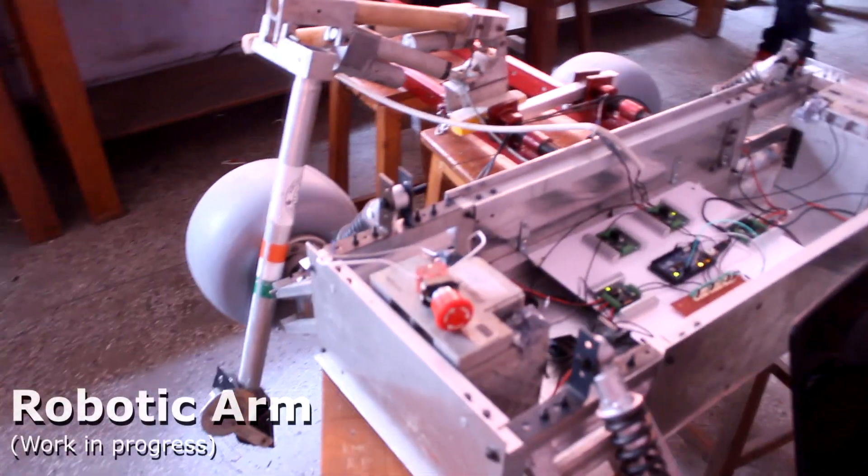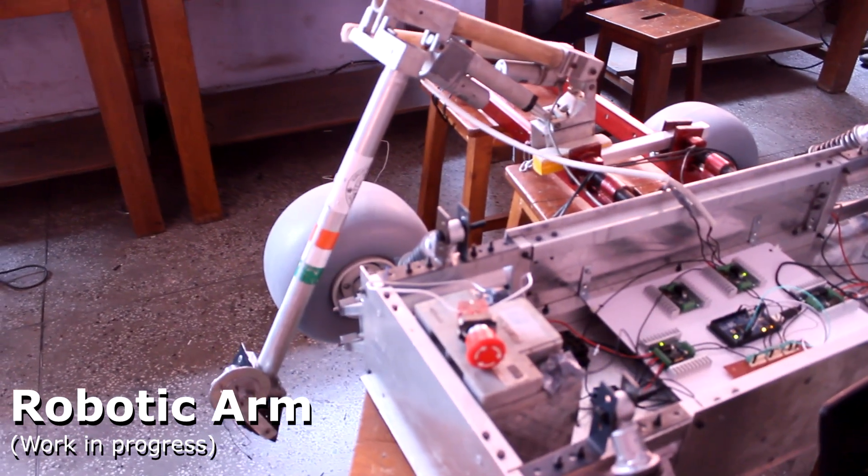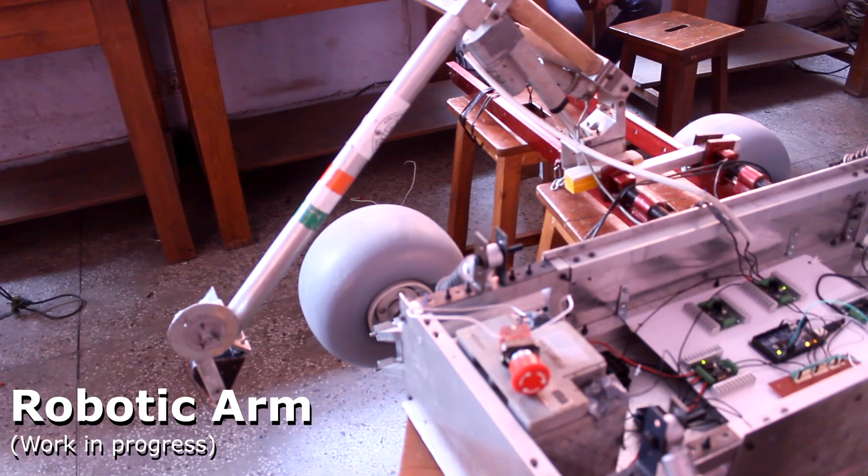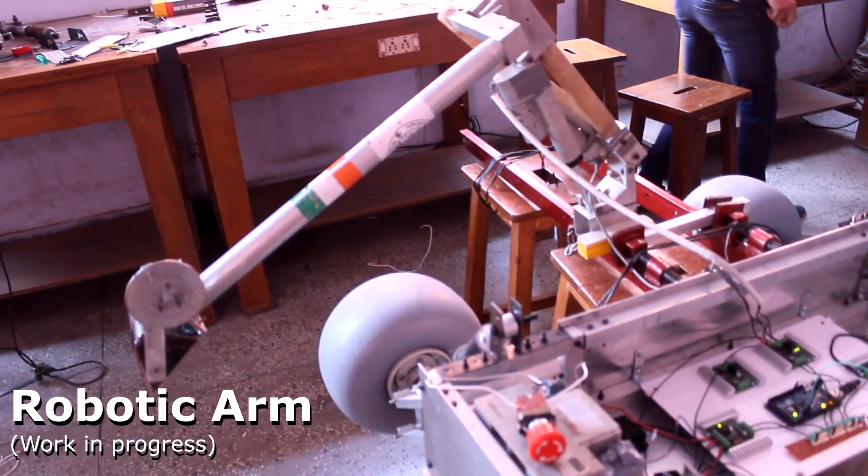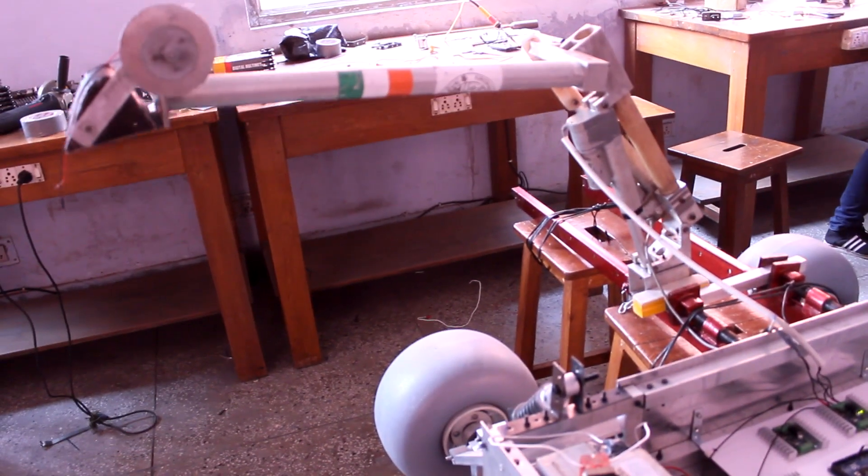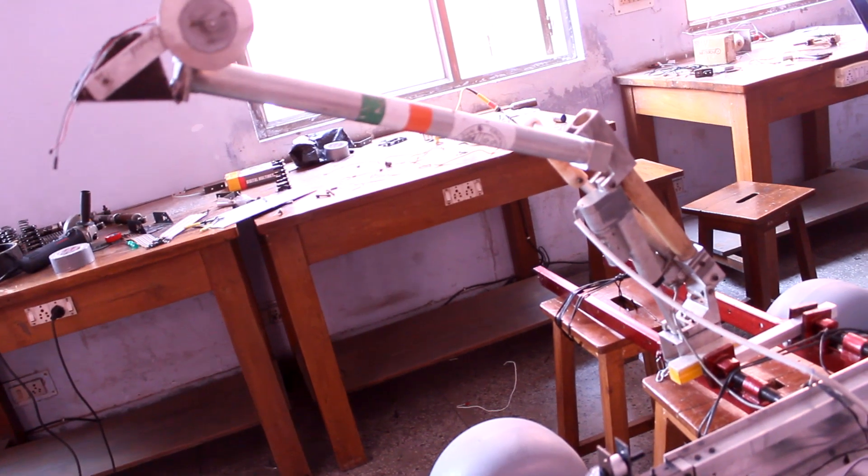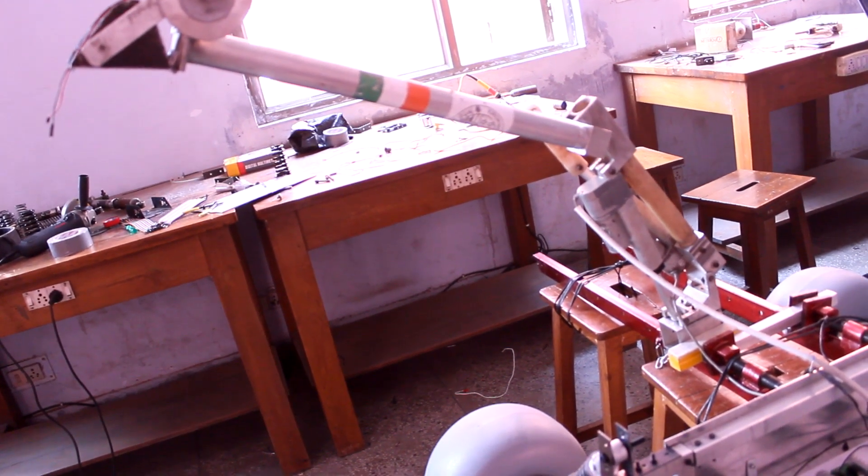The fabrication of the robotic arm is still underway. The robotic arm has been designed using two linear actuators for the movement of the shoulder and elbow. For the astronaut assistance task, the team will be using a parallel jaw gripper.